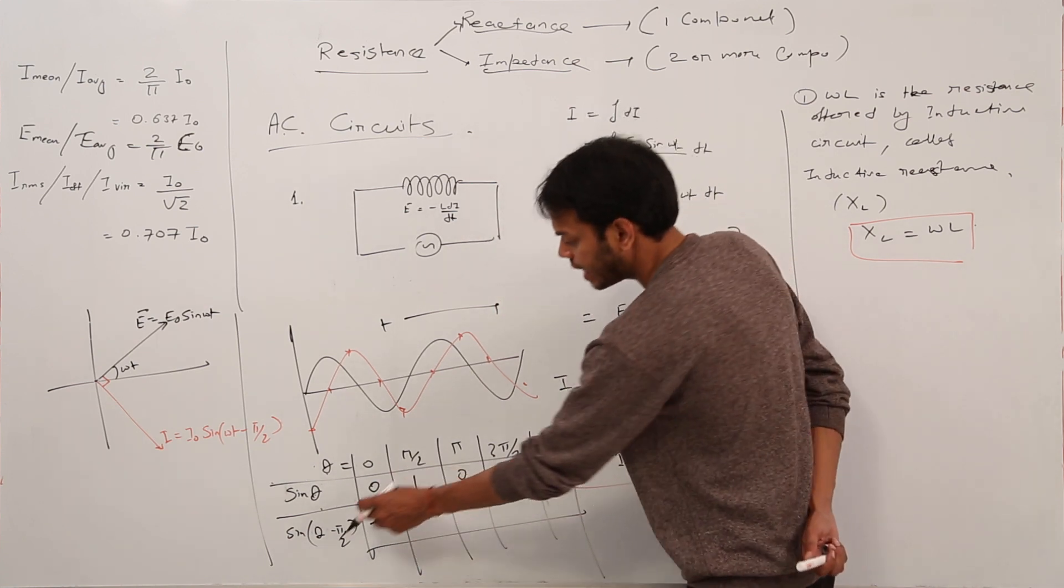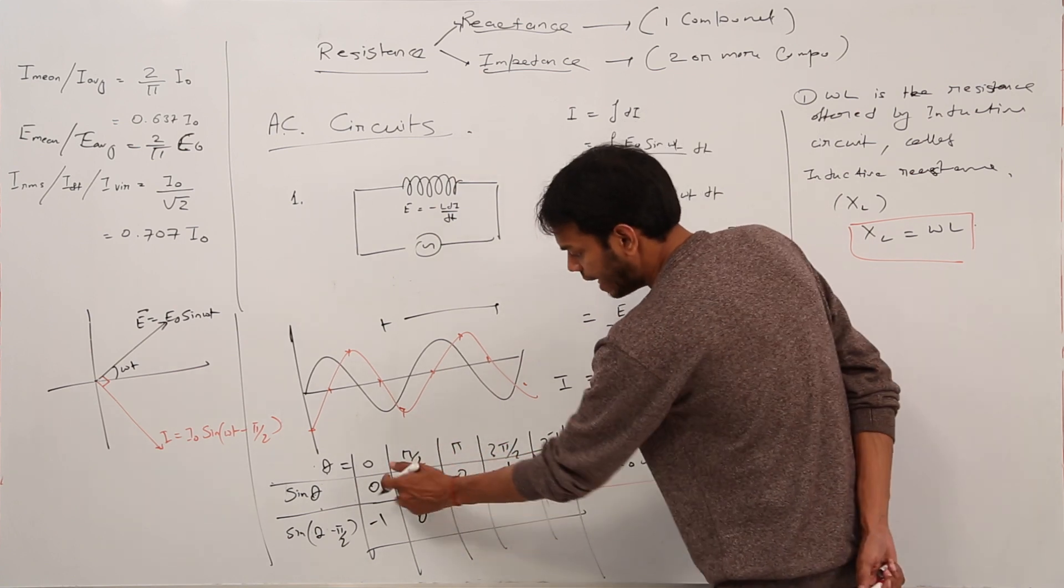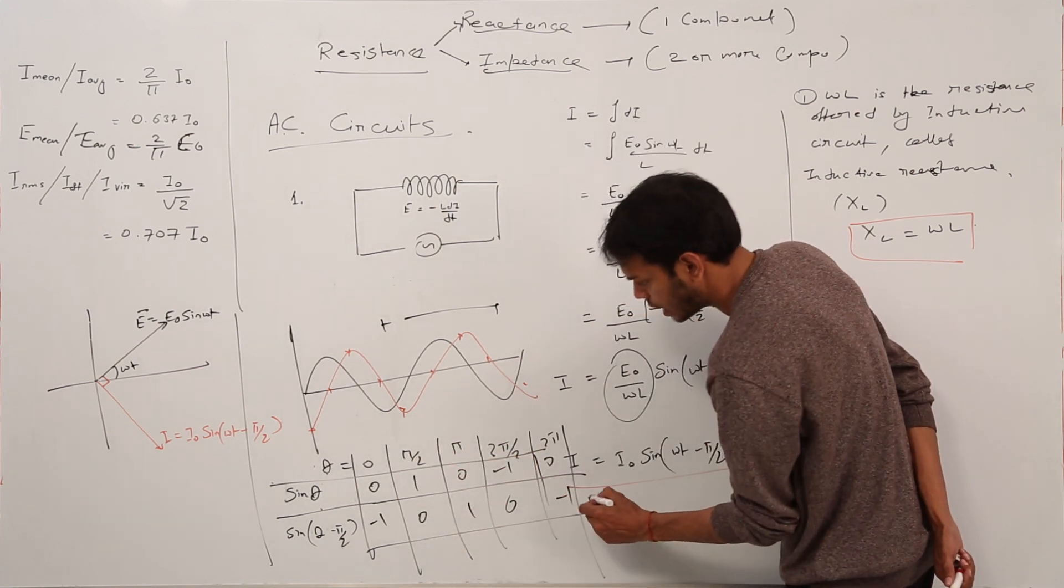Then, at θ = π/2, π/2 - π/2 = 0. Sin 0 is 0, and from this the pattern will follow, right? -1.